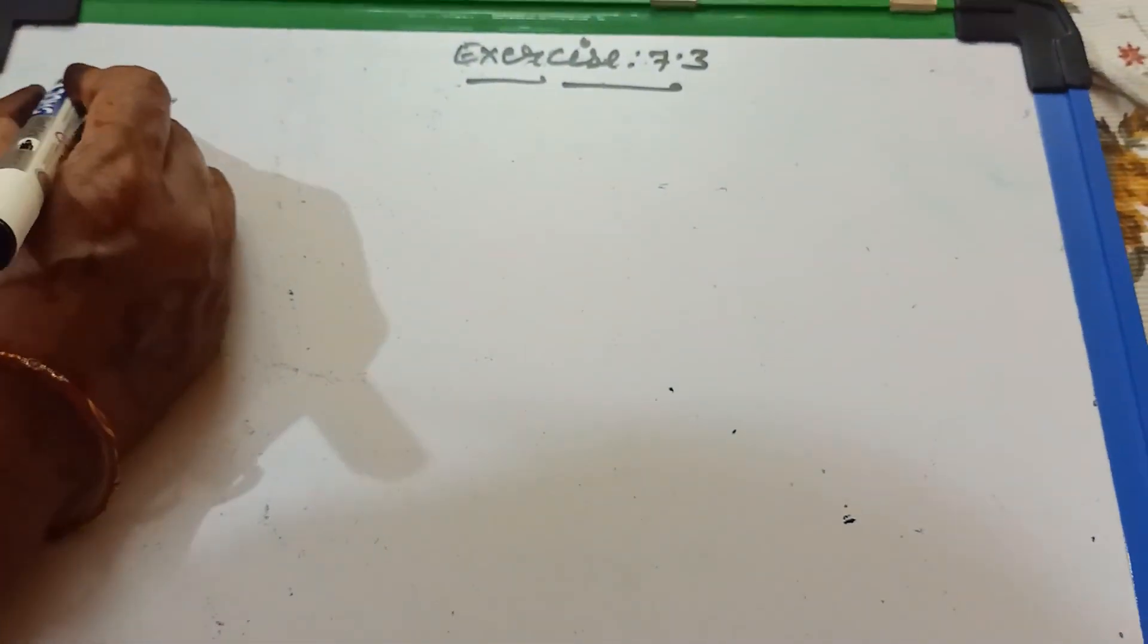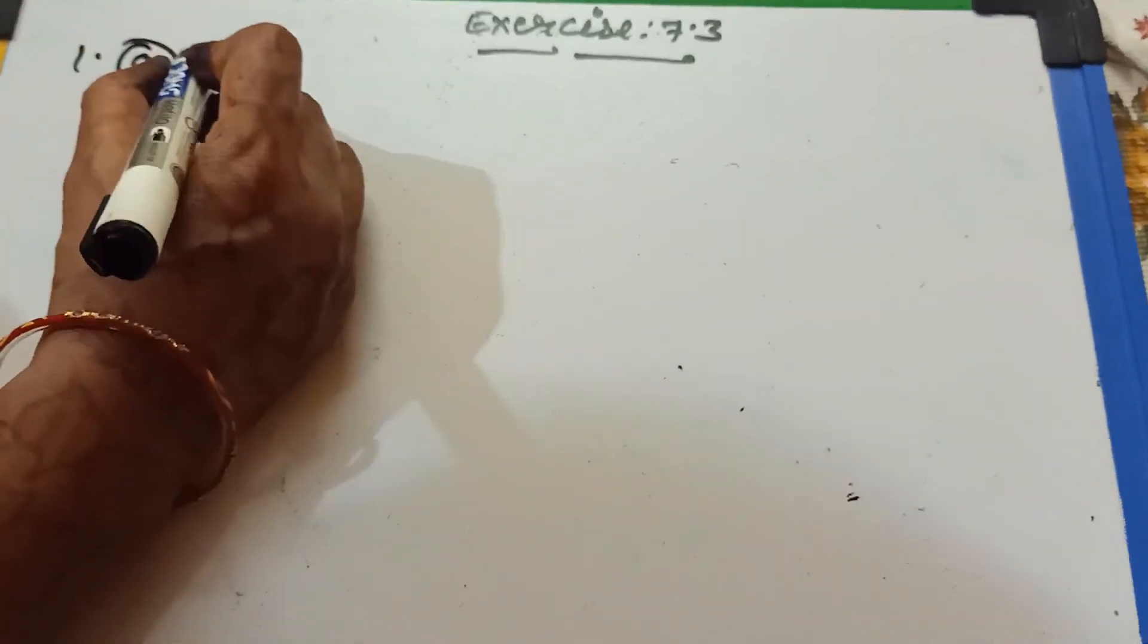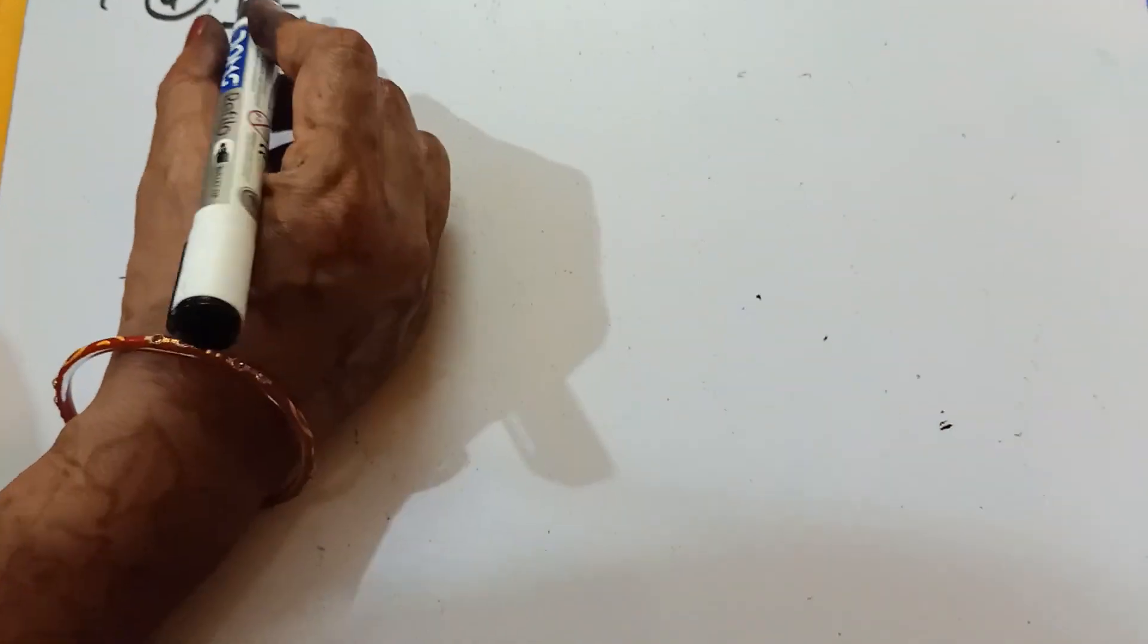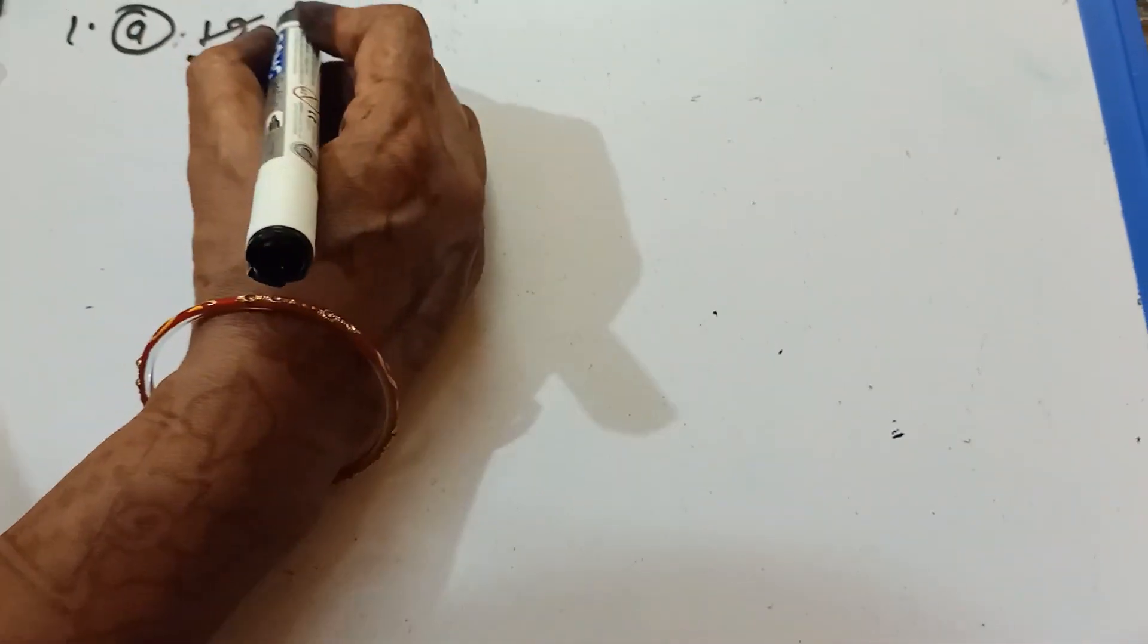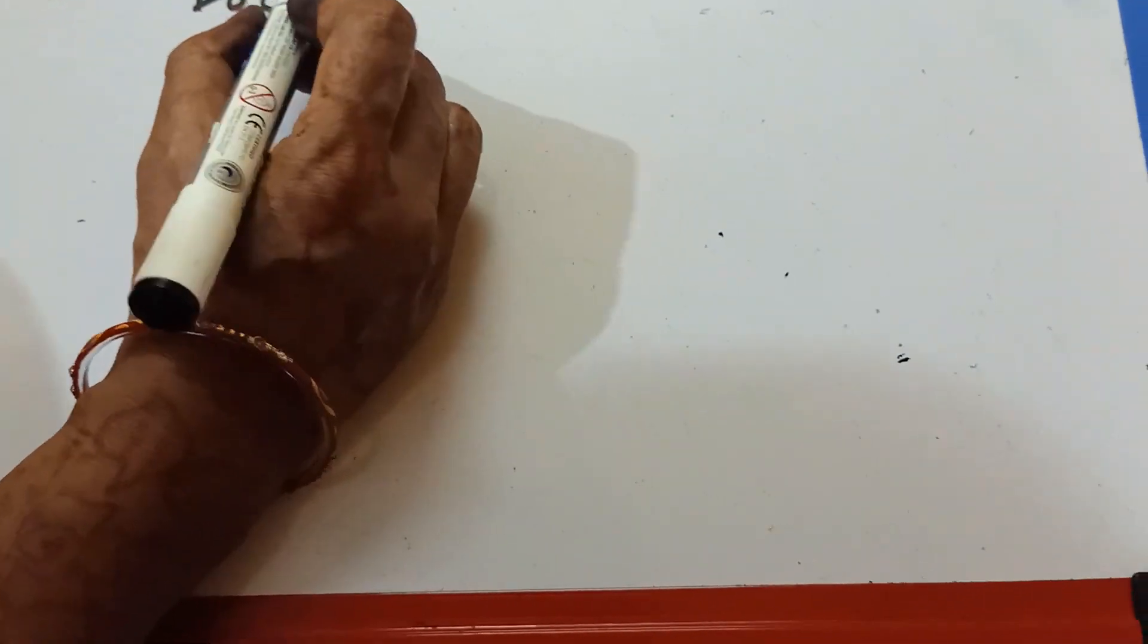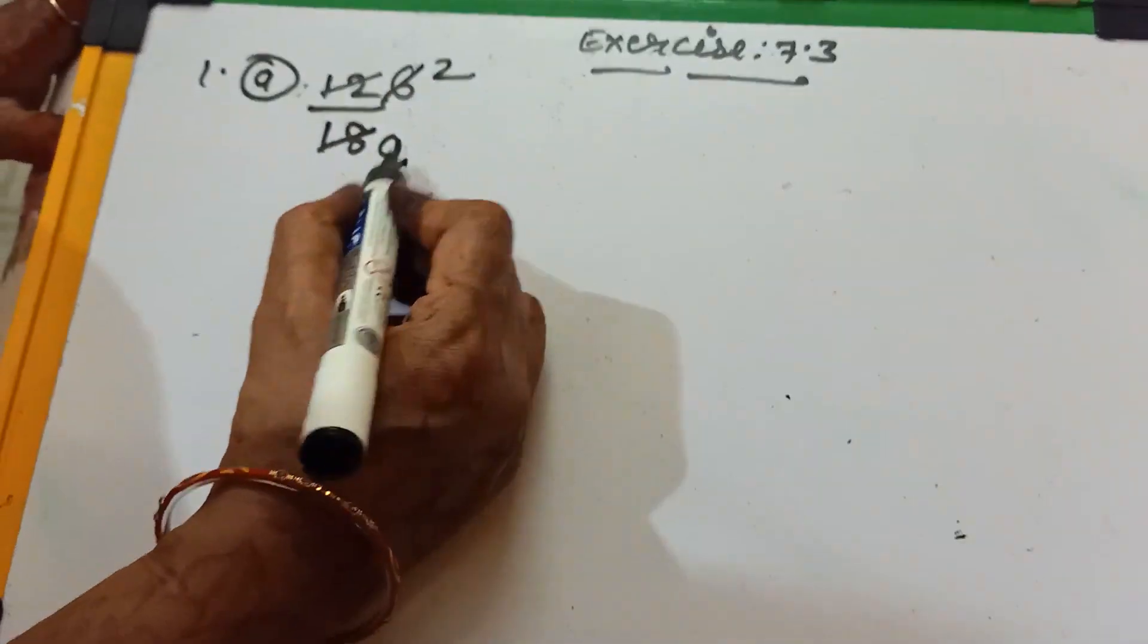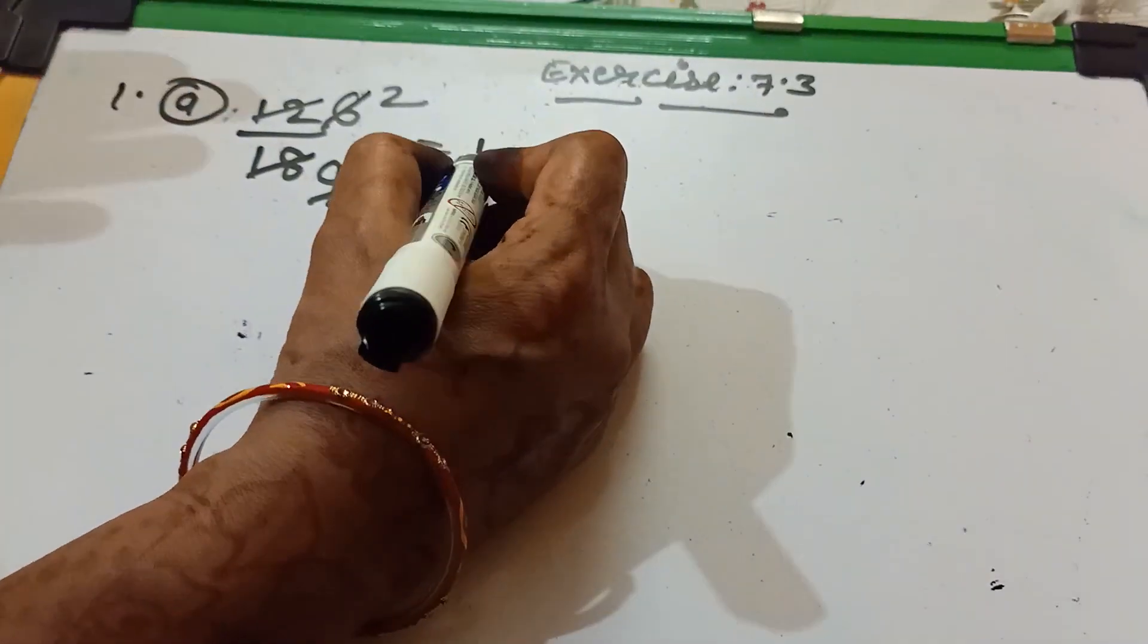First I am taking from question number 1 A number. How can we find out the lowest term? You know very well. First we divide with 2. 2 sixes are 12. 2 nines are 18. Again with 3. 3 twos are 6. 3 threes are 9. So it is not in lowest term. We write here no.